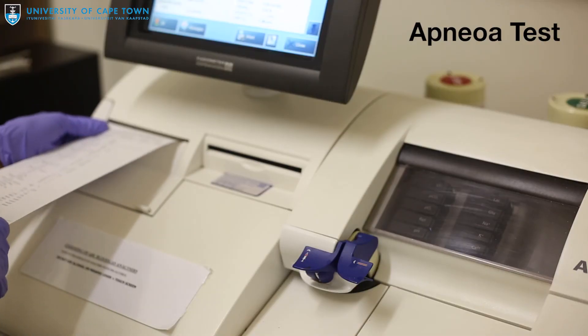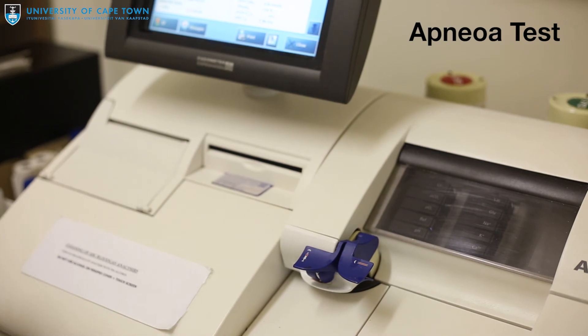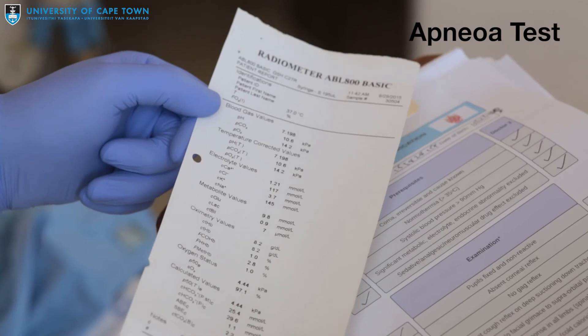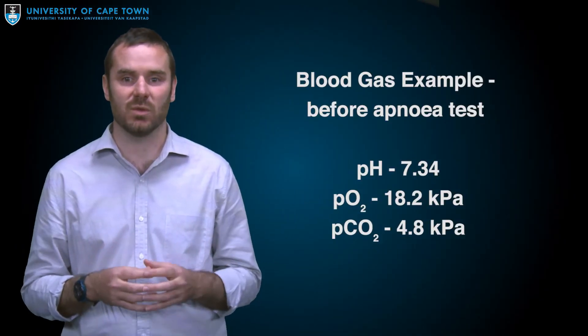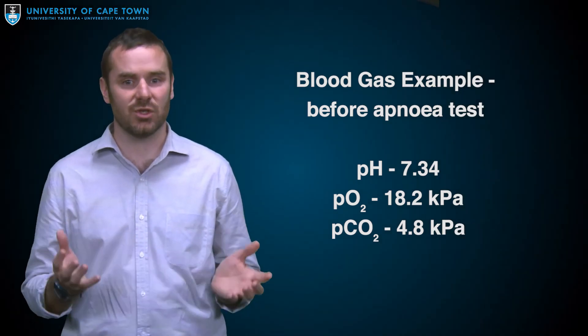The final test used to confirm someone brain dead is the apnea test. Before the test begins, an arterial blood gas is performed to determine the oxygen, carbon dioxide, and pH levels in the blood are within normal limits. The patient is then ventilated with 100% oxygen for at least five minutes in order to saturate the body with oxygen and prevent hypoxemia during the test.